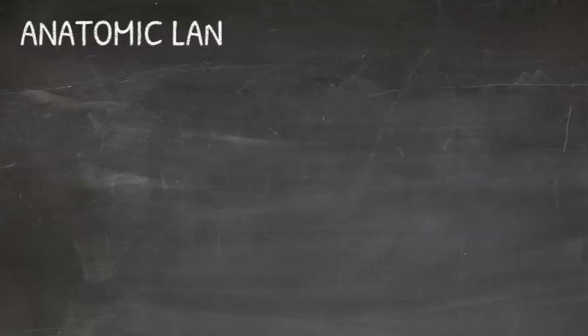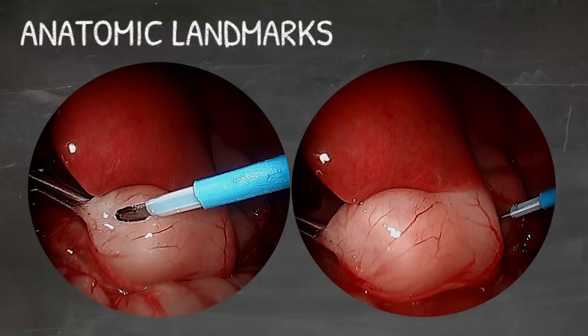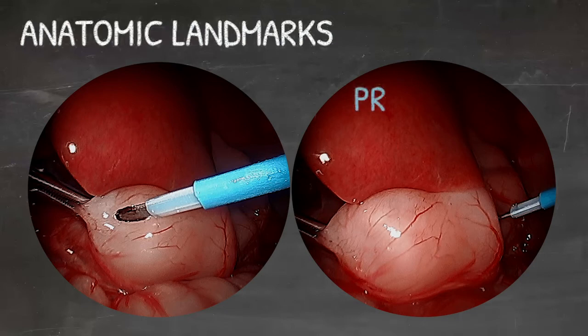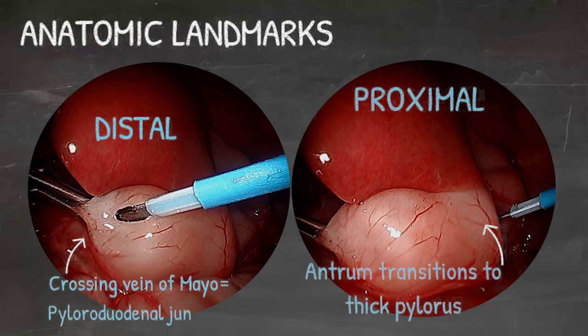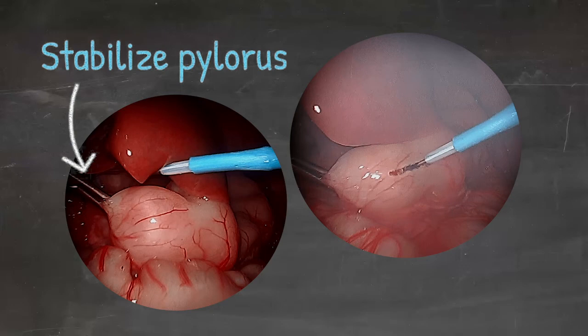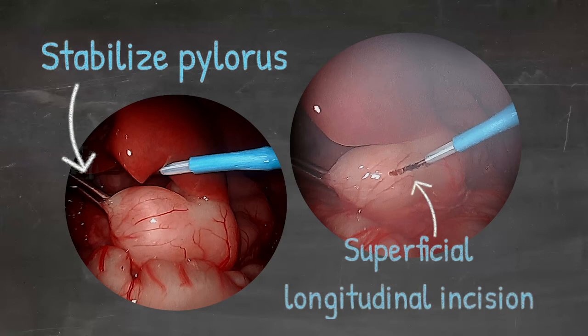Either laparoscopic or open, the surgical principle of myotomy is the same. We need to understand the anatomic landmarks that guide the extent of incision. The proximal edge can be easily identified as the antrum transitions to a thick pylorus. The distal extent is generally to the crossing vein of Mayo, or the white line. This marks the pyloroduodenal junction. The pyloric channel needs to be held in place so that the incision and spreading is exact. A superficial longitudinal incision is made in the serosa between the proximal and distal end of the pylorus, staying within the edges. This can be done with a pyloromyotomy blade or a bobe.